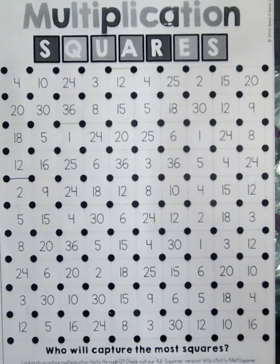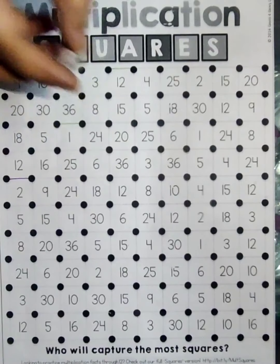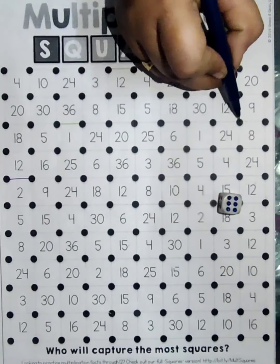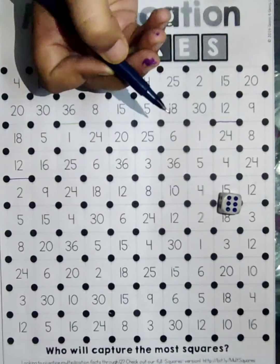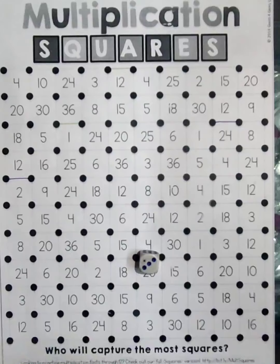My opponent player will roll the dice. She got four and then six, so six times four is twenty-four. She'll draw the line at twenty-four.